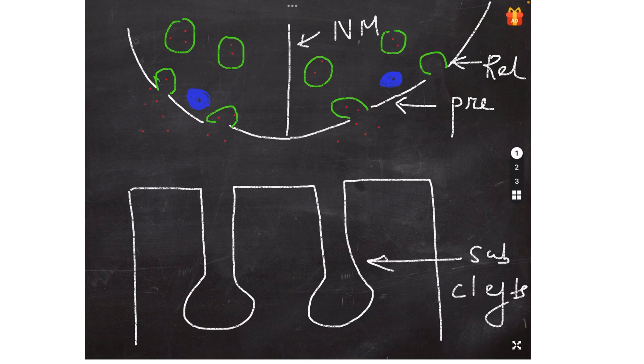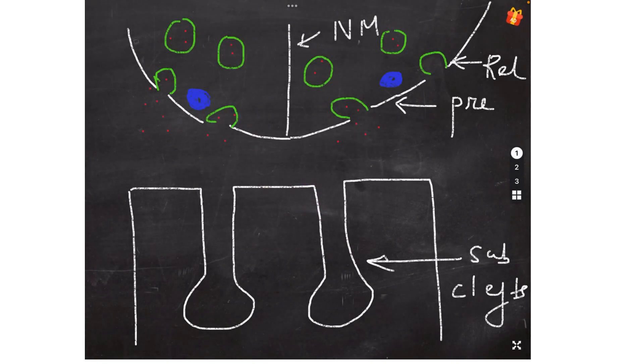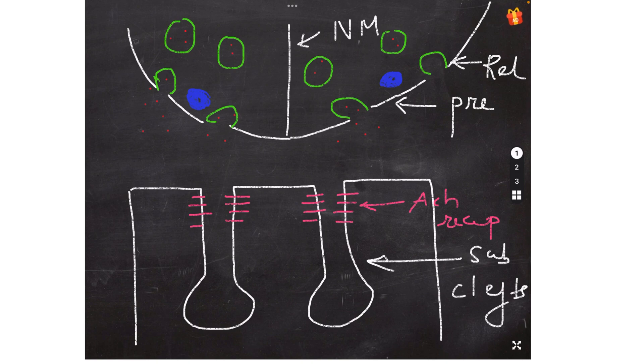Now the subneural clefts have two kinds of structures. The first structures are present immediately at the opening of the subneural clefts. These are called the ACH receptors, they are actually nicotinic ACH receptors, nicotinic acetylcholine receptors.